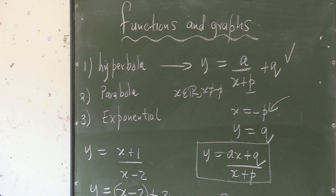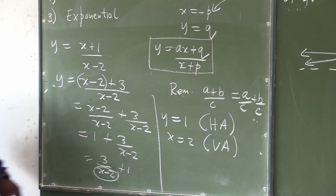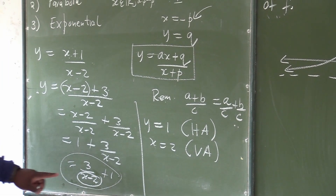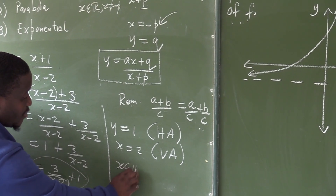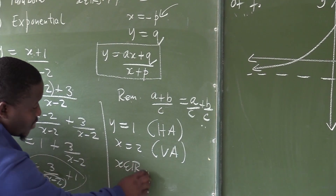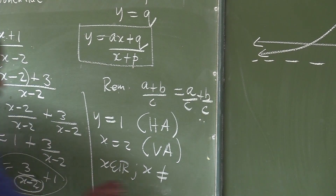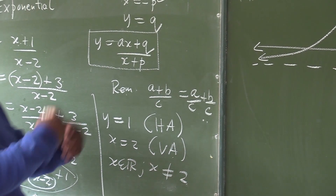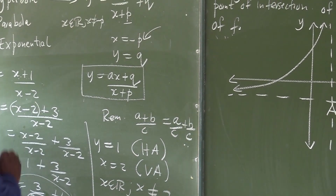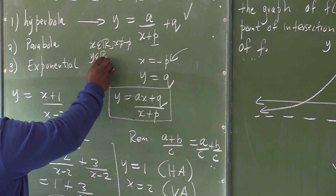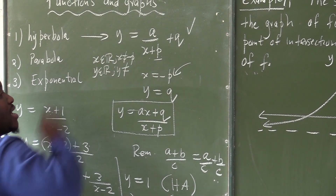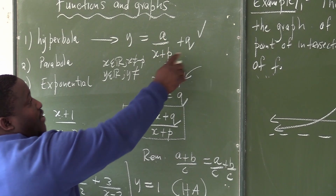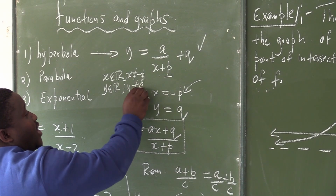Let us go to the graph we have here. If I were to say what is the domain of this graph, apply the very same principle: x is an element of real numbers, but x cannot be equal to 2, since 2 is the vertical asymptote. For the range, apply the same principle: y is an element of real numbers, but y cannot be equal to the horizontal asymptote. In the standard form that is q, so y cannot equal q. For our example, the horizontal asymptote is 1, so y cannot equal 1.